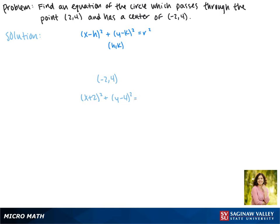And now we need to find our radius. It passes through the point (2, 4), which is exactly 4 units away from our center, so then our radius must be 4.